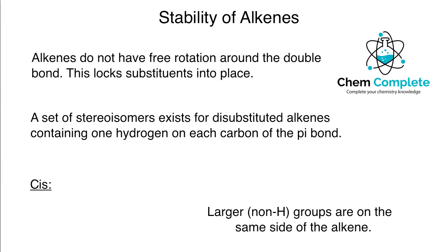Stability of alkenes. We want to focus on what makes alkenes stable and which alkenes would be considered more stable than others in a relative comparison. The first thing to realize is that alkenes do not have free rotation around their double bond or their pi bond. This is important because it can lock components into place around a double bond, unlike sigma bonds where free rotation allows groups to orient optimally to avoid sterics.